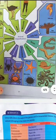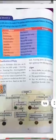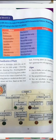Chapter 5 covers animal classification into vertebrates and invertebrates, and classification of plants. Plants are classified into those which do not produce seeds and those which can produce seeds. Non-flowering plants are gymnosperms and flowering plants are angiosperms.